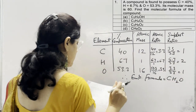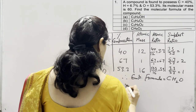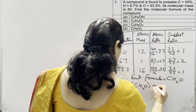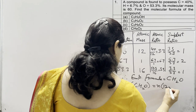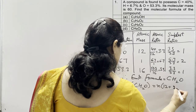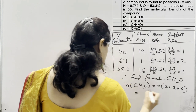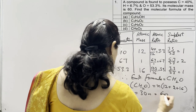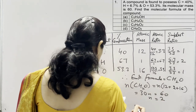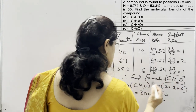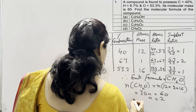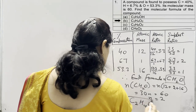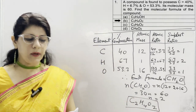Now we need to find the molecular formula, and molecular mass is given. We know that N × empirical formula (CH₂O) equals the molecular formula. For carbon 12, hydrogen 2×1 = 2, and oxygen 16 — that gives 30N, and molecular mass is 60. Therefore N = 2. Multiplying the empirical formula by 2 gives the molecular formula C₂H₄O₂, which is option B.